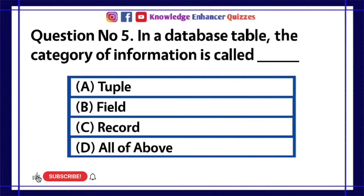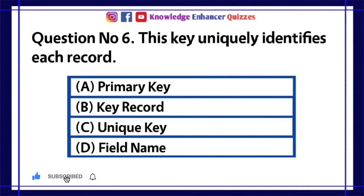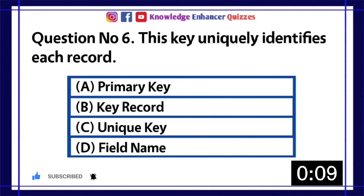Option B is the right answer. Question number six: This key uniquely identifies each record. A) Primary key, B) Key record, C) Unique key, D) Field name.